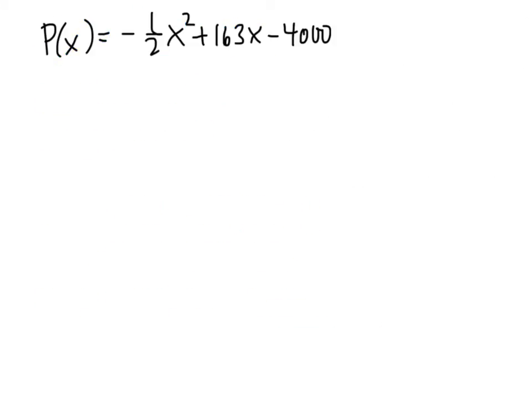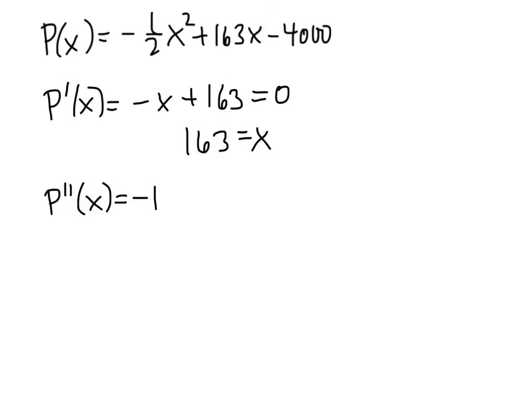So now we want to maximize the profit function. And the way we maximize a function is by taking a derivative and looking for critical values. So P prime of X is going to be negative X plus 163. That's a polynomial, so it's never undefined. We set it equal to 0, and we get the solution that X equals 163. Now we need to test that value to see if it really is the max that we're looking for. The easiest way to do that here is to take the second derivative. P double prime of X is the constant negative 1. And so P double prime of 163 is negative 1. That's negative, which means we have a max, which is what we wanted.